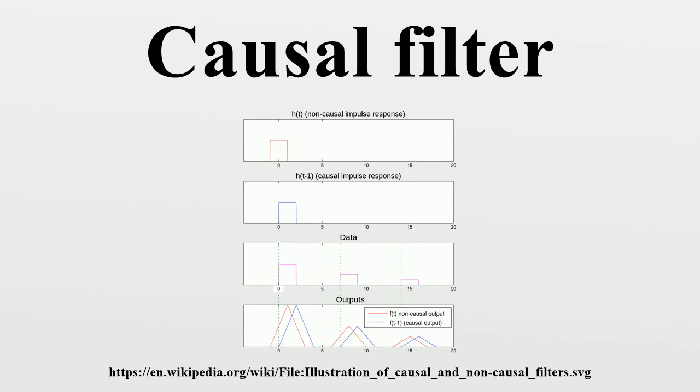In signal processing, a causal filter is a linear and time-invariant causal system. The word causal indicates that the filter output depends only on past and present inputs.